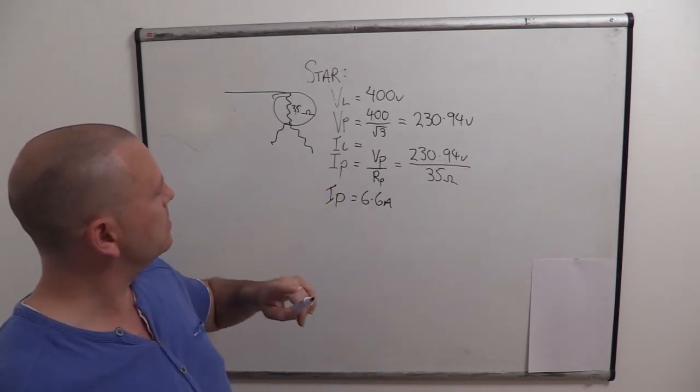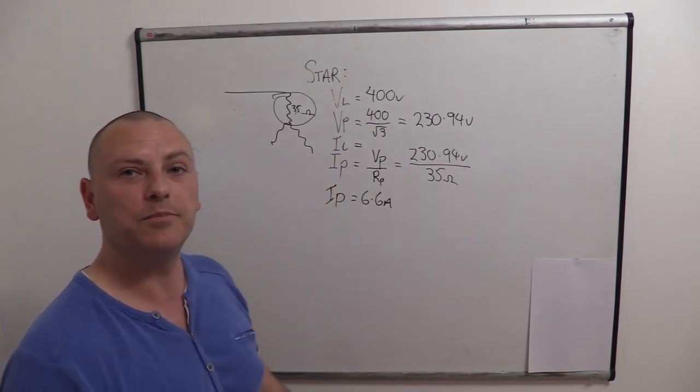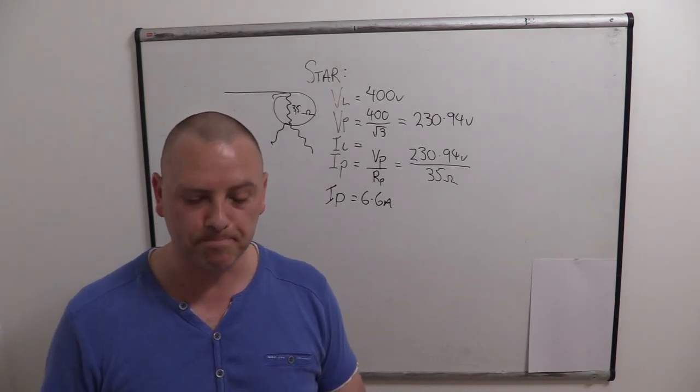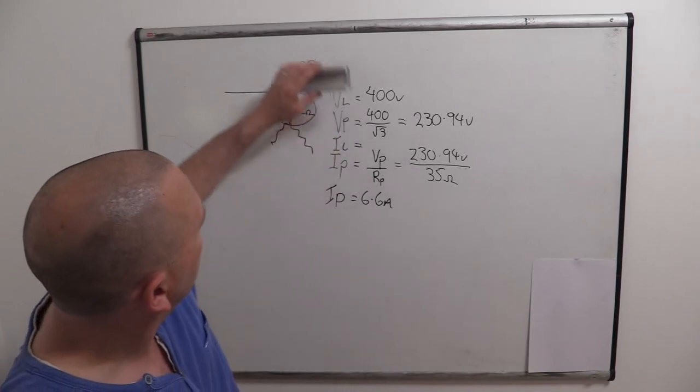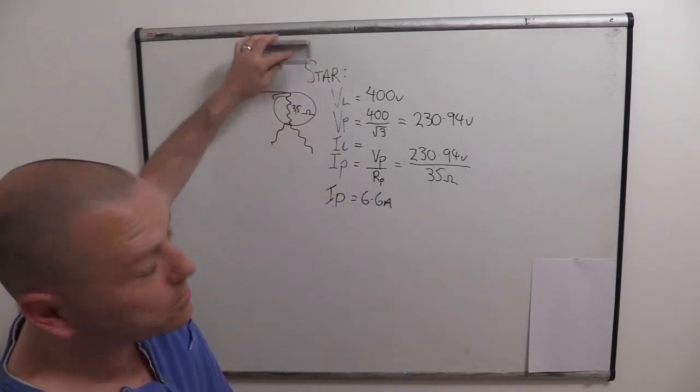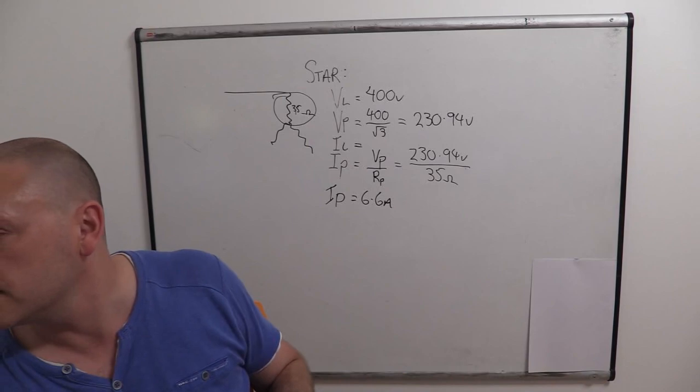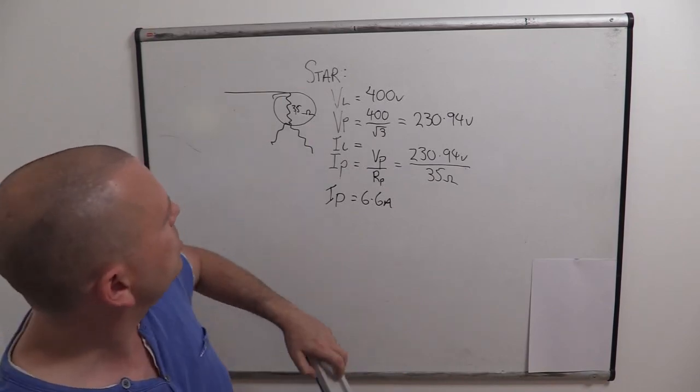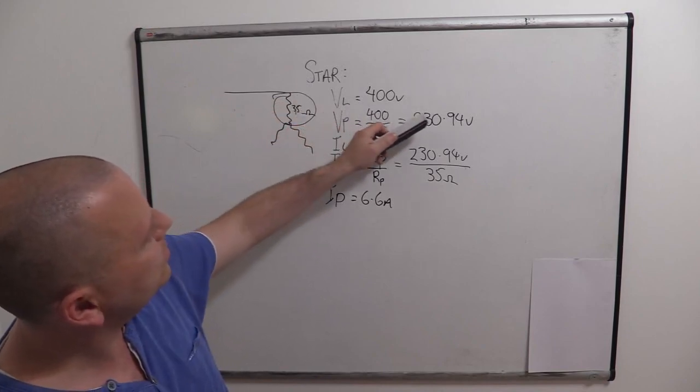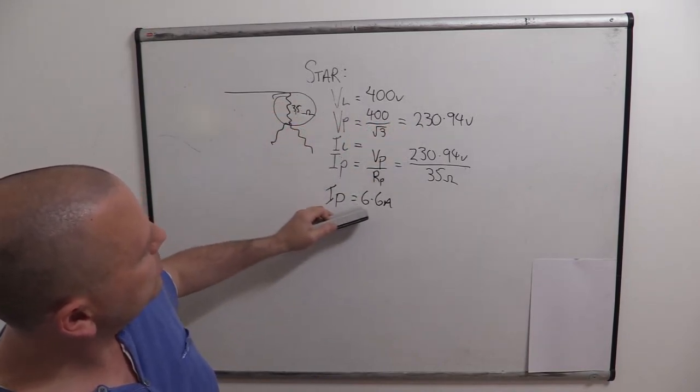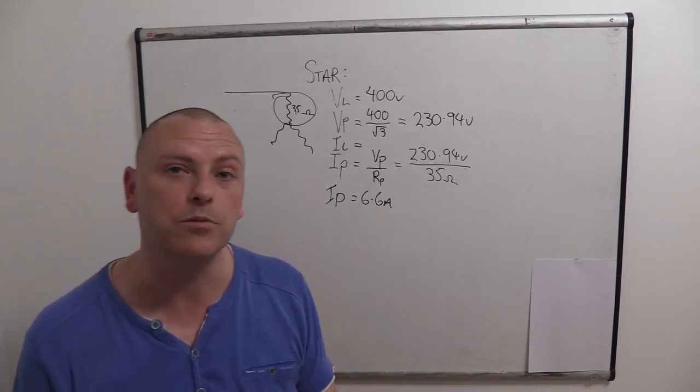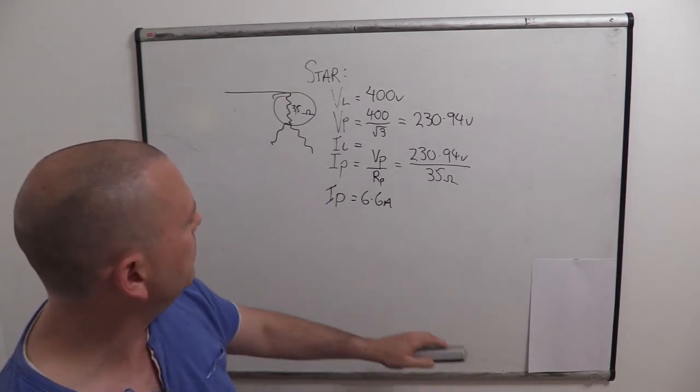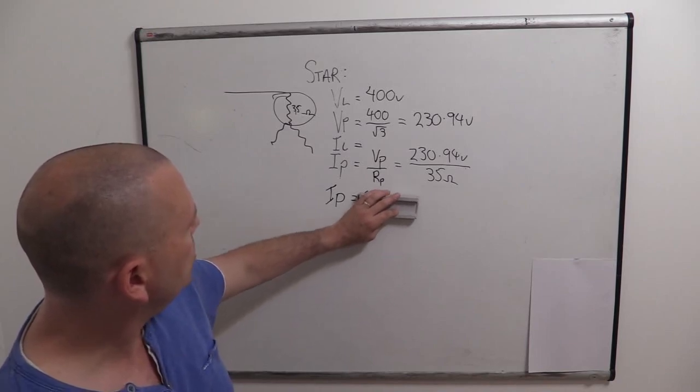And we know that that's going to be the same as our line current, because it is in a star system. Right. So have we answered all that question? Phase and line current, when three resistors each have a, yes. So we've got a line voltage, we've got a phase voltage, we've got a line current which is 6.6 amps, and we've calculated our phase current which is also 6.6 amps. That's how that is.